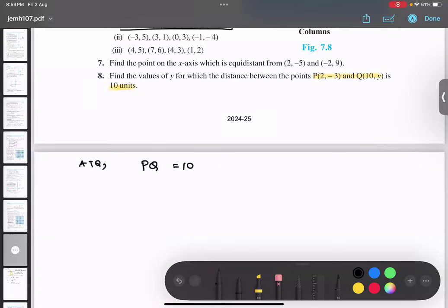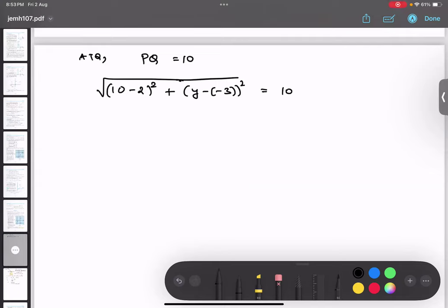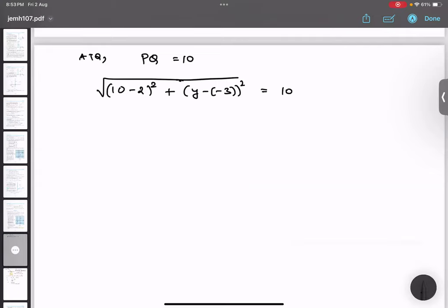So what is the distance? Distance formula I will apply. x2 is 10, so 10 minus 2 whole square plus y minus minus 3 whole square equals to 10. I don't want to keep it in root the way I did earlier in the previous question. I will do squaring both sides.